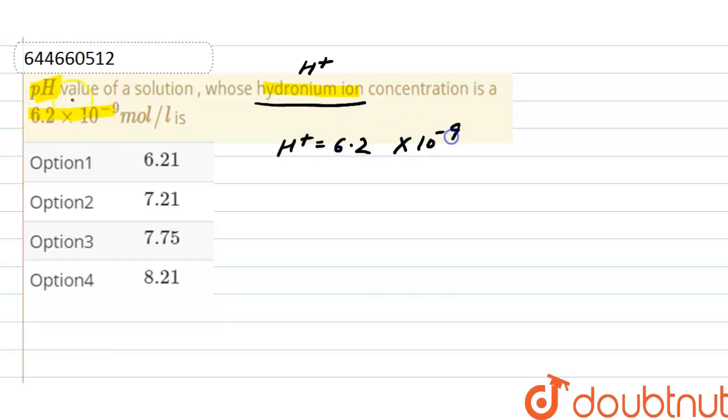As pH, it is equal to minus log of H+ ion. Putting the value here: minus log of 6.2 × 10^-9.